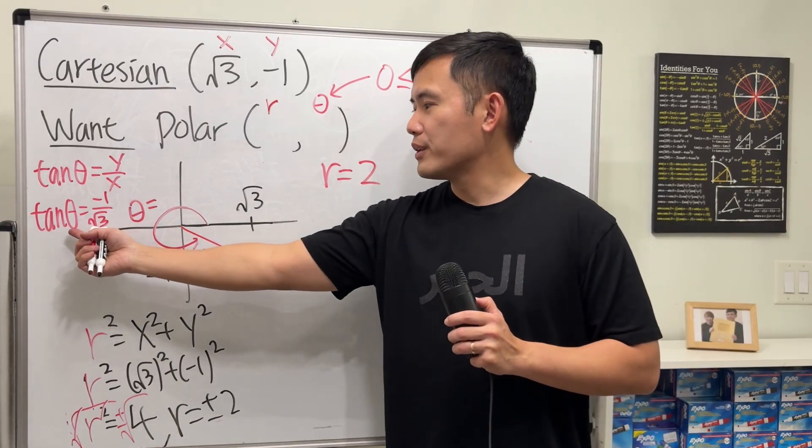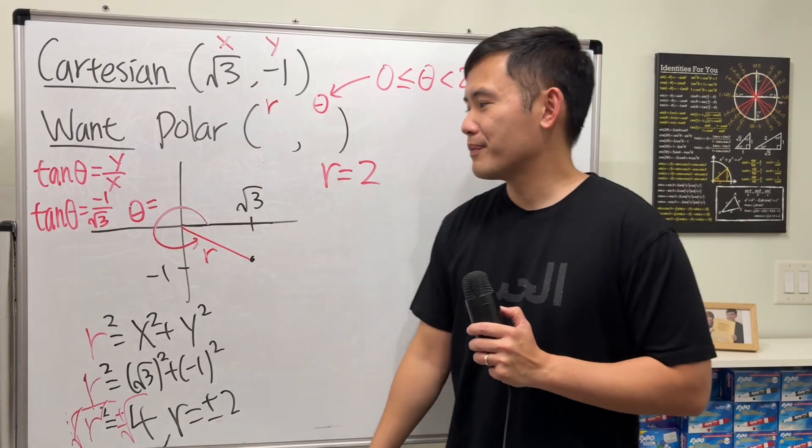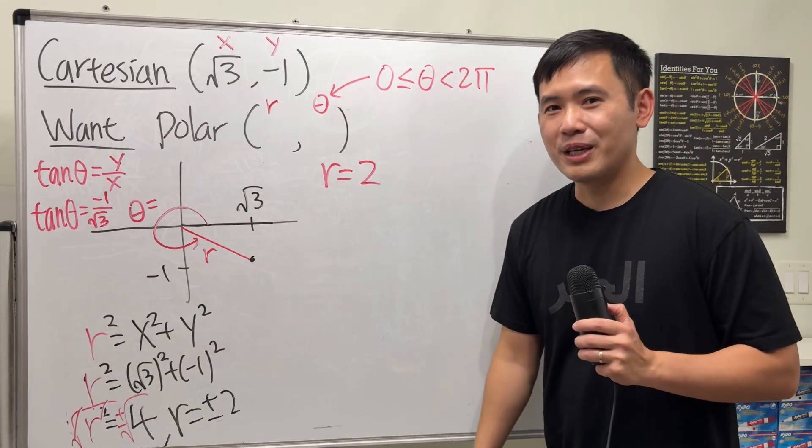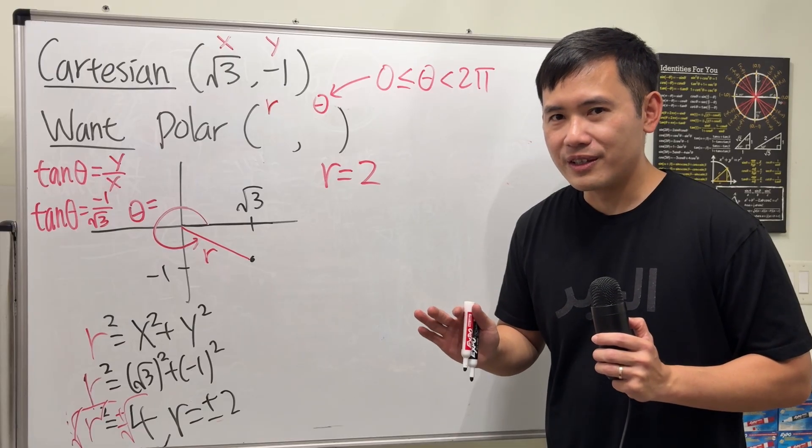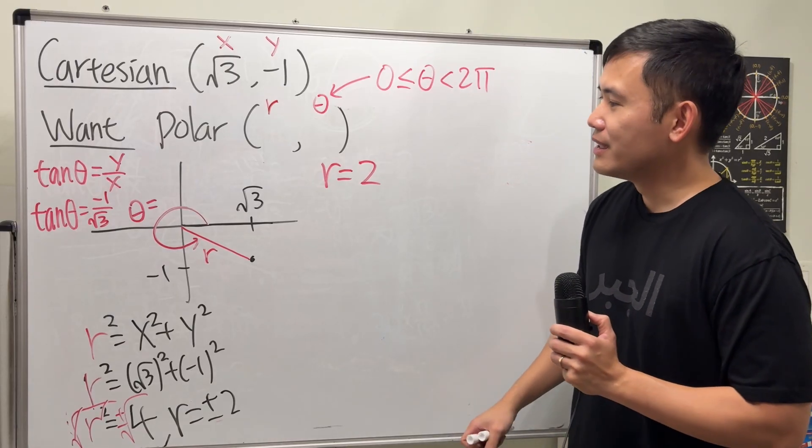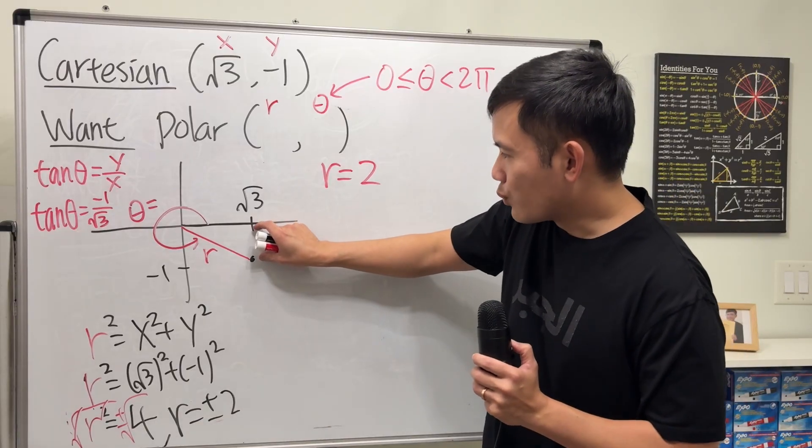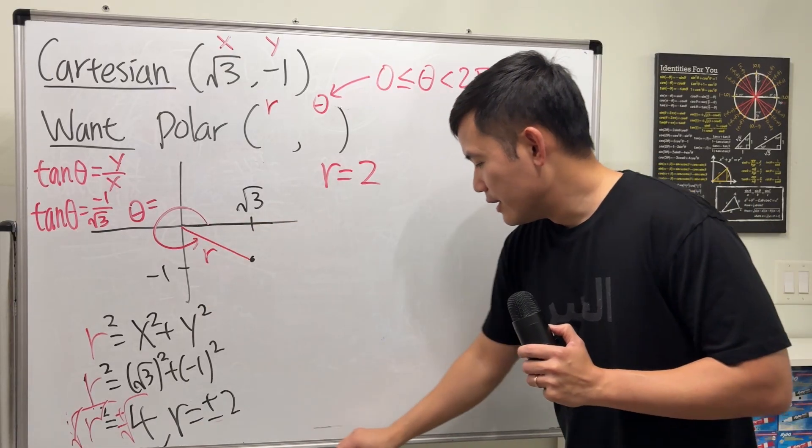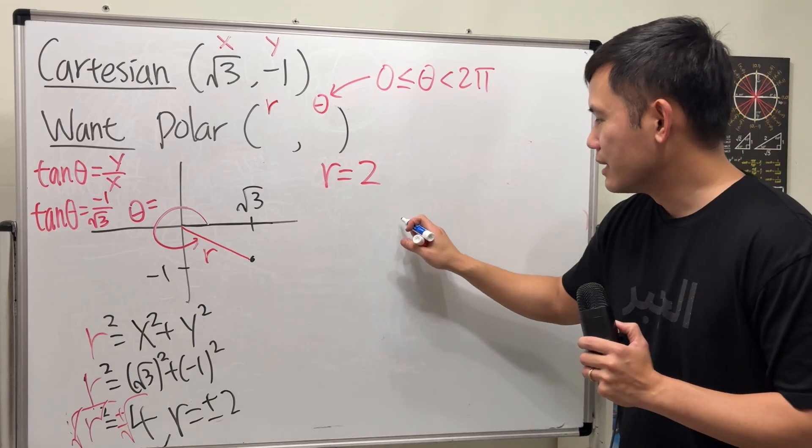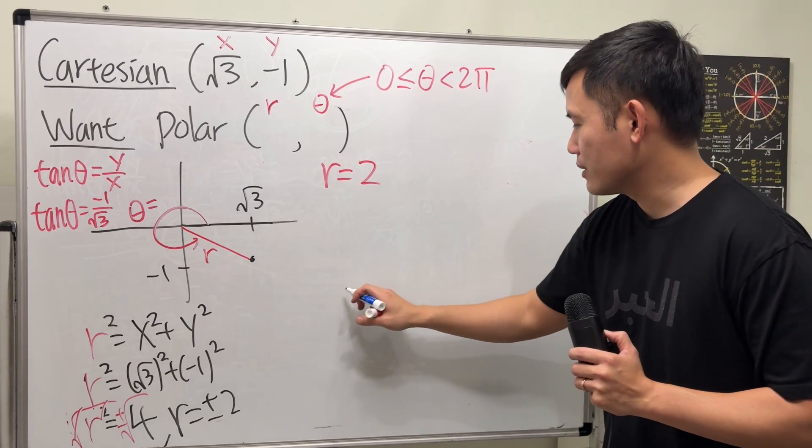But the question is, how do we figure out the angle even though we have this? Well, still, use the picture. And I will tell you, if you are doing this without a calculator, then you are going to use the special right triangle. Here we have, this is -1, but it's just like 1, and that's √3. So you definitely have to remember the 30-60-90 special right triangle, which is like this.